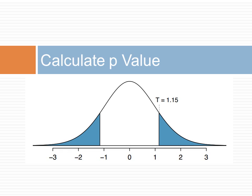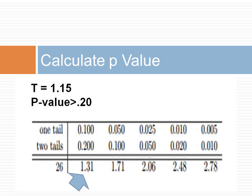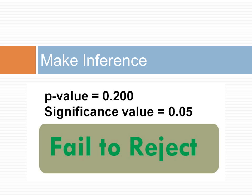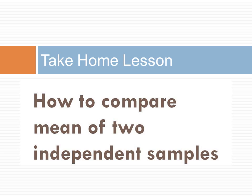We now look up the p-value associated with the t-distribution with 26 degrees of freedom. In the table, we examine the row of 26 degrees of freedom. Because the t statistic of 1.15 is smaller than 1.31, the value on the left column of the row, the two-tailed p-value is larger than 0.200, or 20%. Because the p-value is so large, we do not reject the null hypothesis. In this lecture, we have used our inference framework to see how to compare the means of two independent samples.